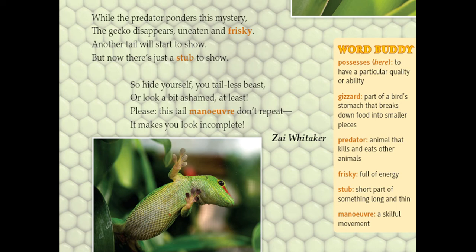A stub is a short part of something long and thin — here the tail is referred to as a stub. Hide yourself, you tailless beast! A 'beast' is an animal, especially a large or dangerous four-footed one — here comparing the gecko to a four-footed creature. Or look a bit ashamed at least! Please, this tail maneuver don't repeat — it makes you look incomplete. 'Maneuver' means a skillful movement; the gecko moves gradually and skillfully to catch insects using its tail.